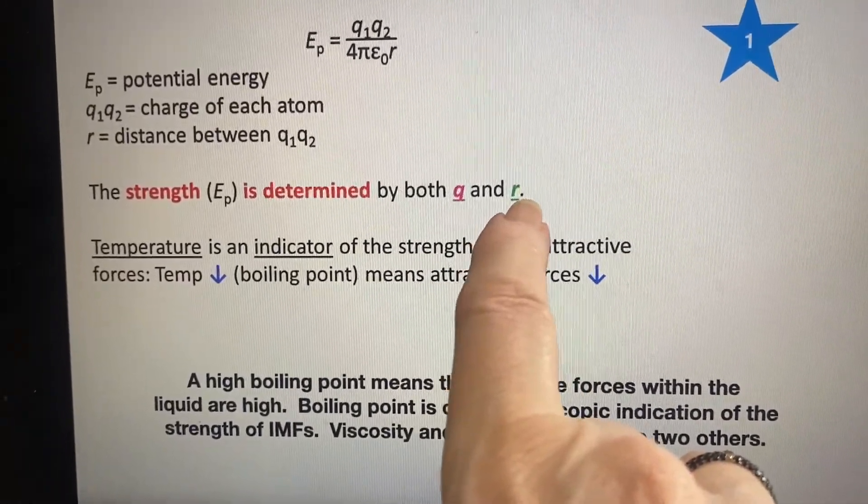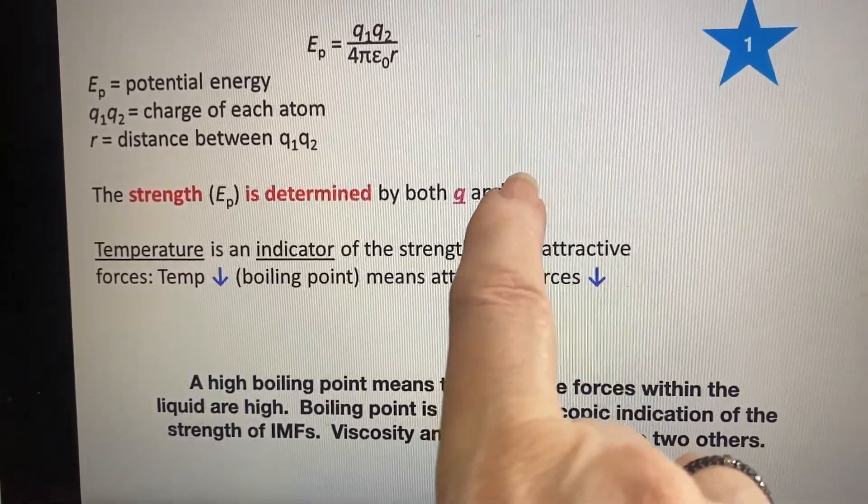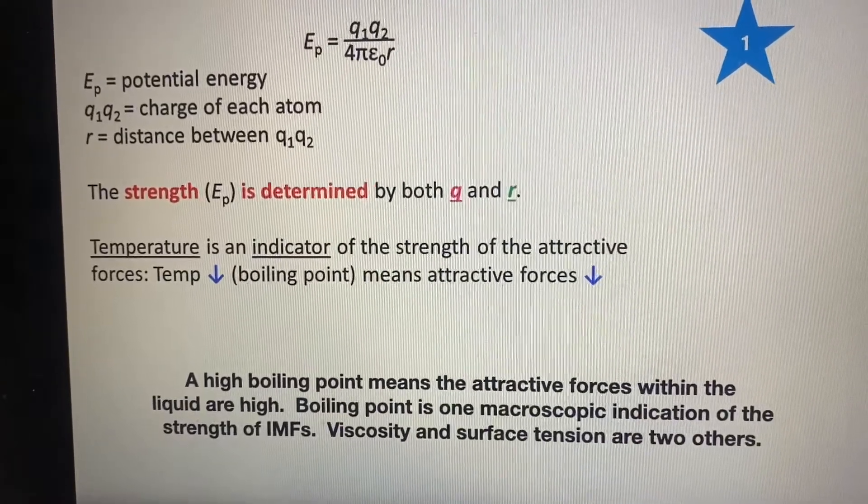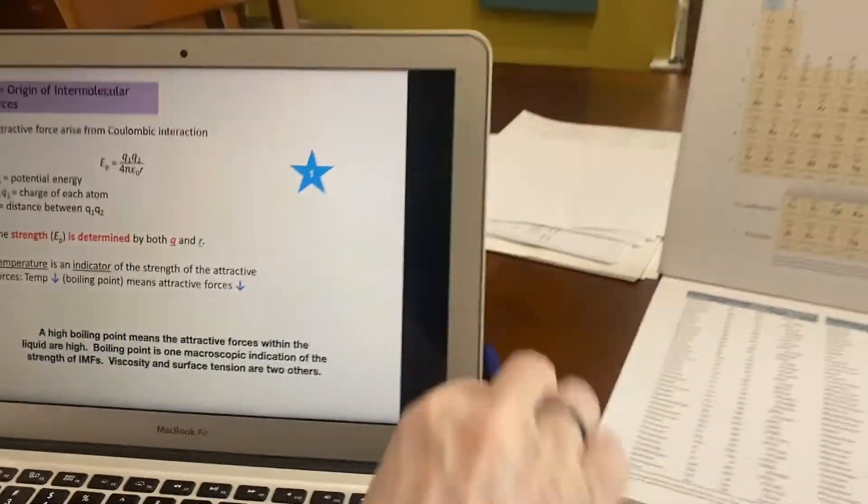All right. Well, that's nice and all. It's kind of confusing. I have a star on here. My star must mean something. So let's think about star number one.